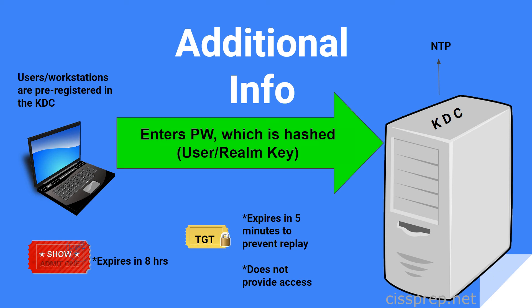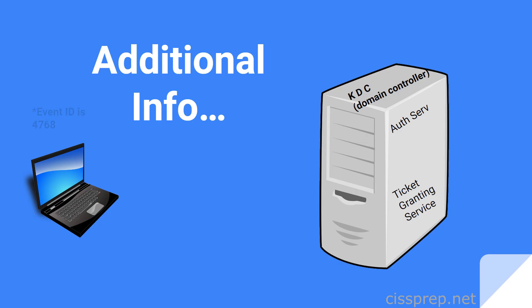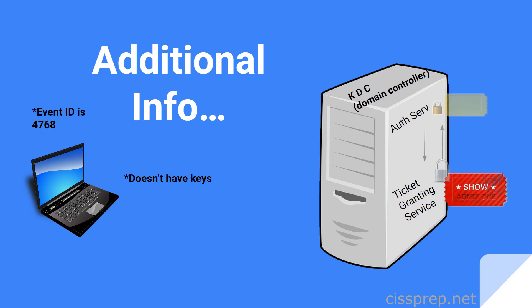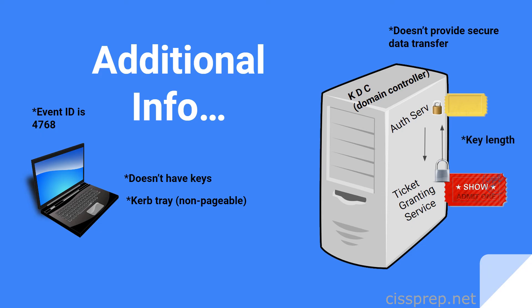When a user logs into a Kerberos security realm, the event ID is 4768. The principal, or user, doesn't have the secret keys that are used to encrypt tickets — only the KDC and the destination server have them. Keys are stored in something called the Kerb tray, which is a non-pageable area of memory. Kerberos doesn't provide a method for secure data transfer; that would require something like IPsec. Key length consideration is important for Kerberos, because you don't want keys that are too large as it will interfere with network performance, but you also don't want too short of keys due to the risk of brute force attacks.